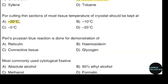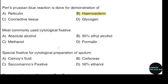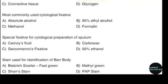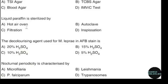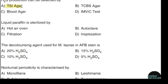The Prussian blue reaction is done for demonstration of hemosiderin. Correct answer: option B. The most commonly used cytological fixative is 95% ethyl alcohol. Correct answer: option B. The special fixative for cytological preparation of sputum is Saccomanno's fixative. Correct answer: option C. The chemical ripening agent used in Harris hematoxylin is sodium iodate. Correct answer: option A. Coating fixatives are usually sprayed over a smear at a distance of 25–30 cm. Correct answer: option A.